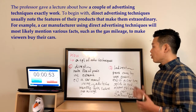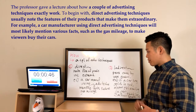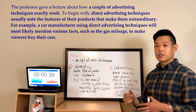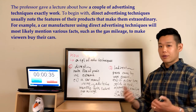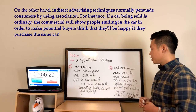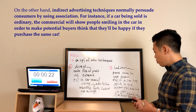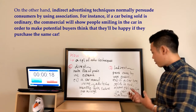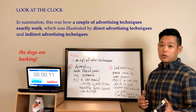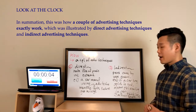To begin with, direct advertising techniques usually note the features of their products that make them extraordinary. For example, a car manufacturer using direct advertising techniques will most likely mention various facts such as gas mileage in order to make viewers buy their cars. On the other hand, indirect advertising techniques normally persuade consumers by using association. For instance, if a car being sold is ordinary, the commercial will show people smiling in the car in order to make potential buyers think that they will be happy if they purchase the same car. In summation, this was how a couple of advertising techniques exactly work, illustrated by direct advertising techniques and indirect advertising techniques.